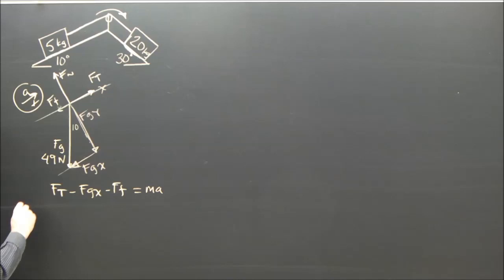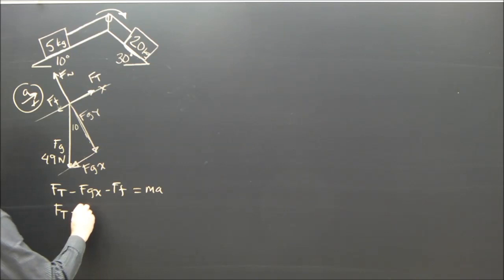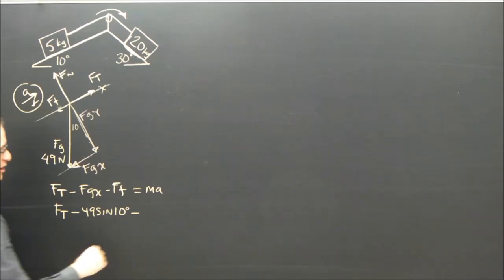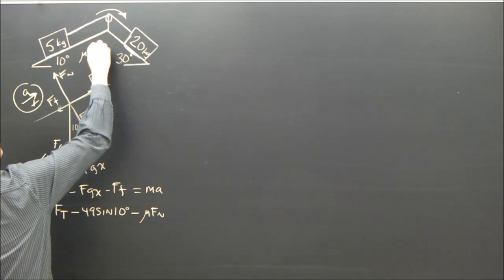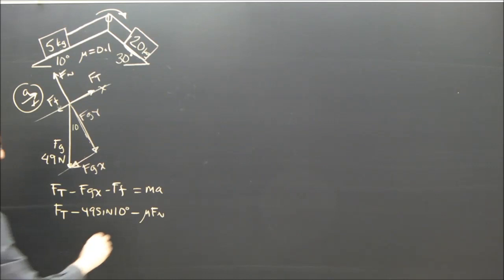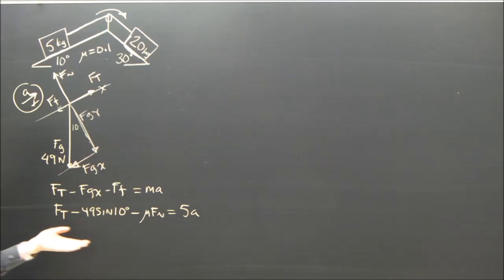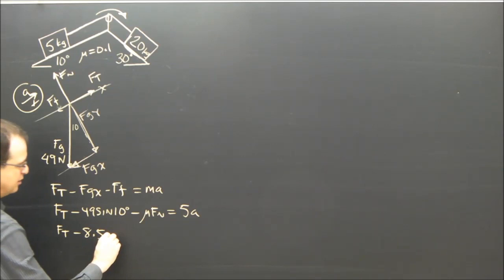So I'll move it here. Let's get ft minus, what's fgx? Well, fg is 49. Fgx is 49 sine 10 degrees. 49 sine 10 degrees. Minus force of friction. How do you calculate force of friction? It's mu fn. And I should have told you mu is 0.1 for both surfaces. And that equals ma, which in this case is 5a. So now I've just got to fill in what I know here. 49 sine 10 is 8.5. So ft minus 8.5, 49 sine 10. Minus what was mu? 0.1.